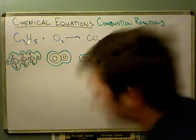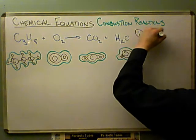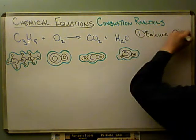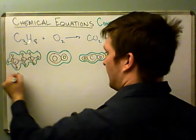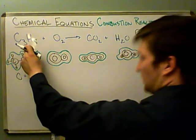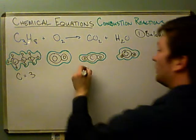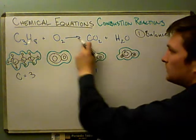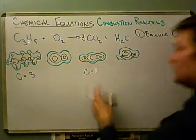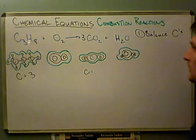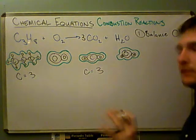Step number one: balance the carbons. Looking at the left side, I have three carbons in propane (C3H8). On the right side, CO2 only has one carbon. So if I put a coefficient of 3 in front of CO2, that gives me the right number of carbons. That does change my number of oxygens, but we're going to leave oxygens until the very end.